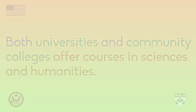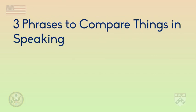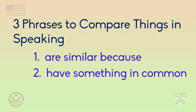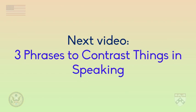So, let's review the three phrases to compare people, places, experiences, or things. One: 'are similar because.' Two: 'have something in common.' And three: 'both...and.' Remember that speakers use these phrases to make their ideas clearer and to explain how two things are similar. In the next video, we will look at some phrases to contrast the differences between two things.